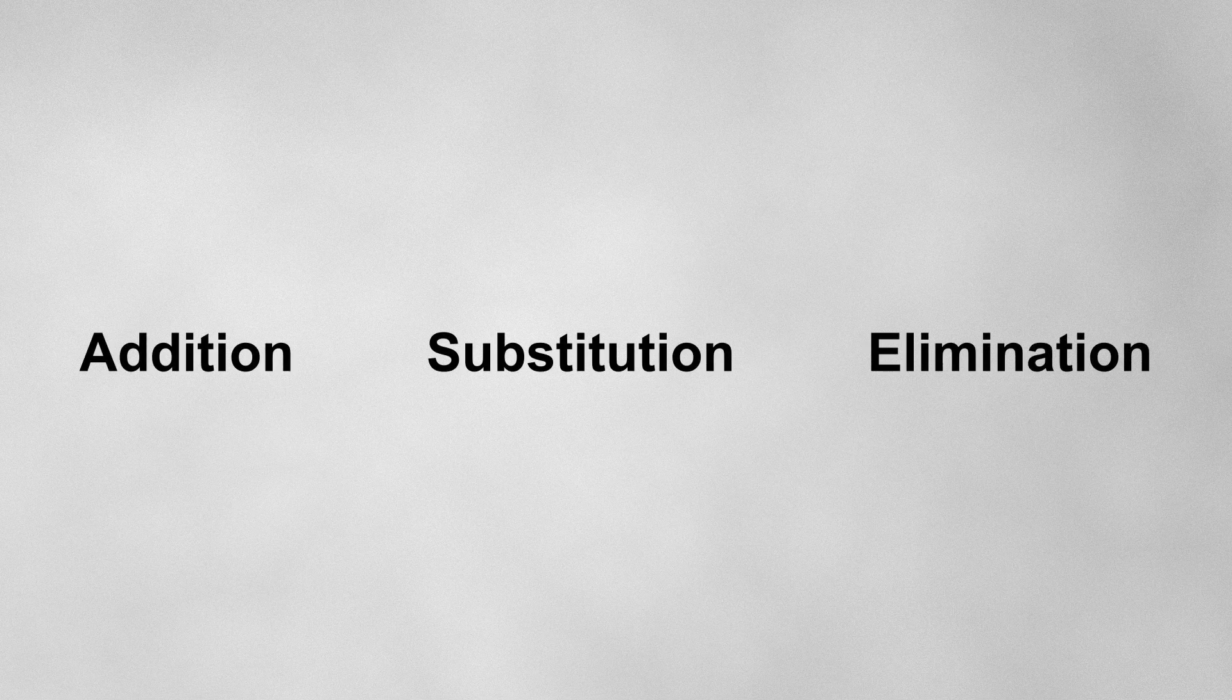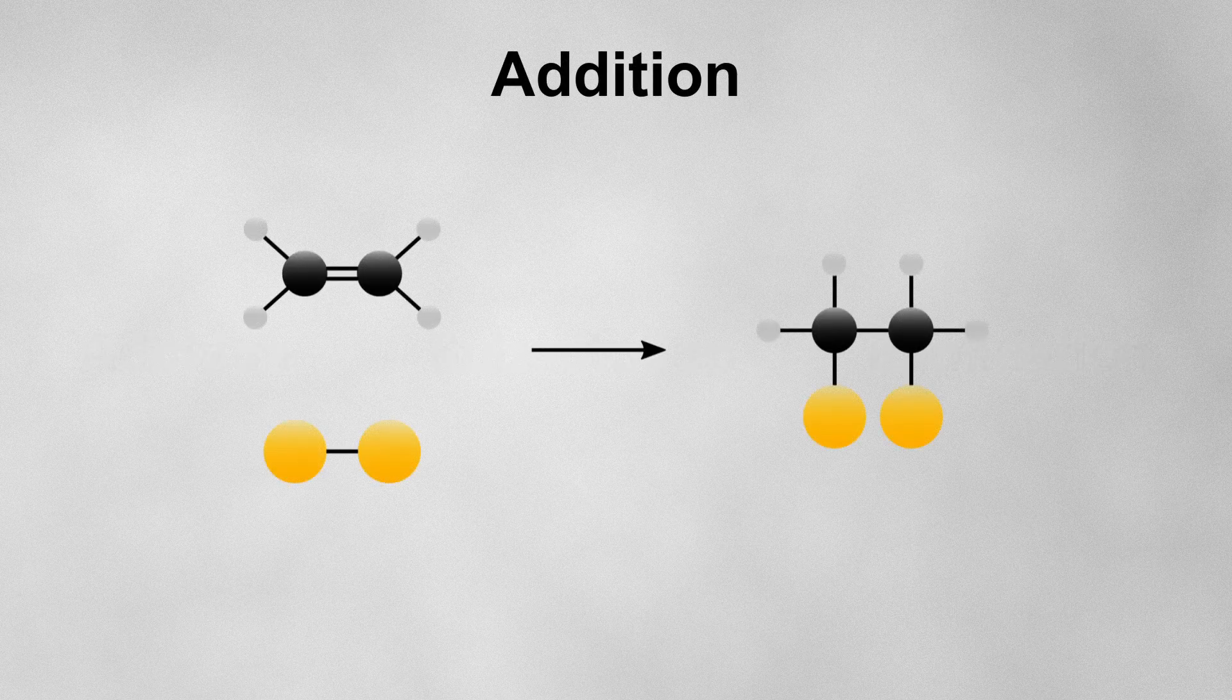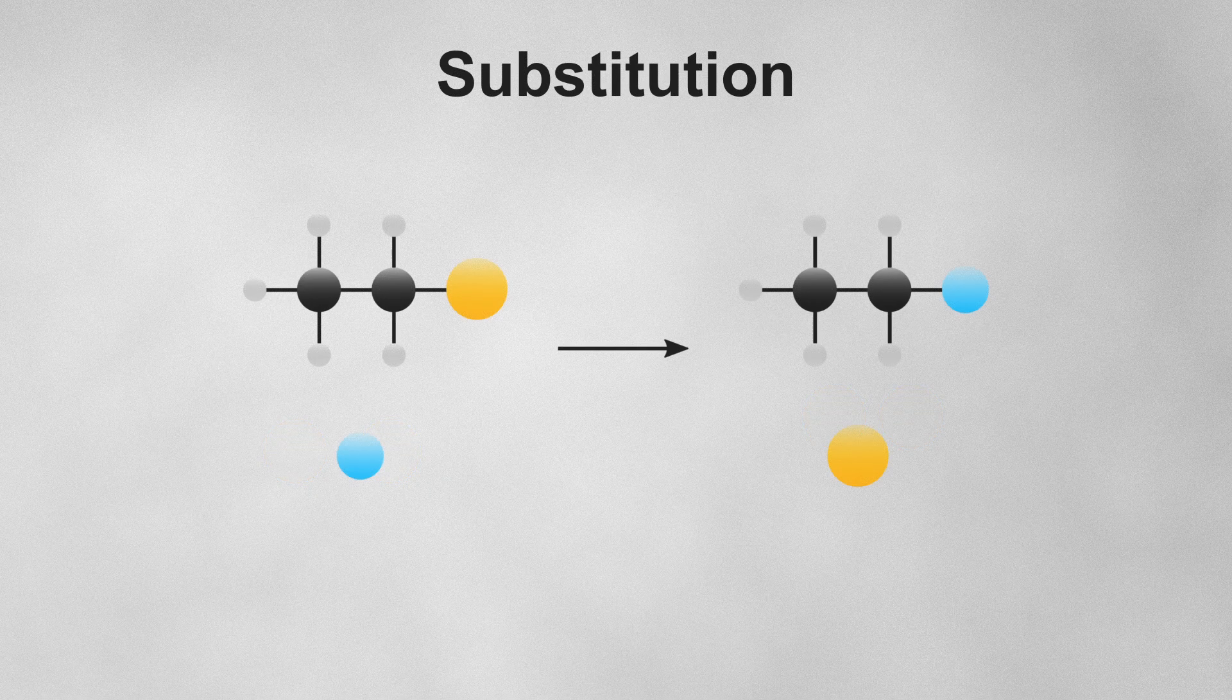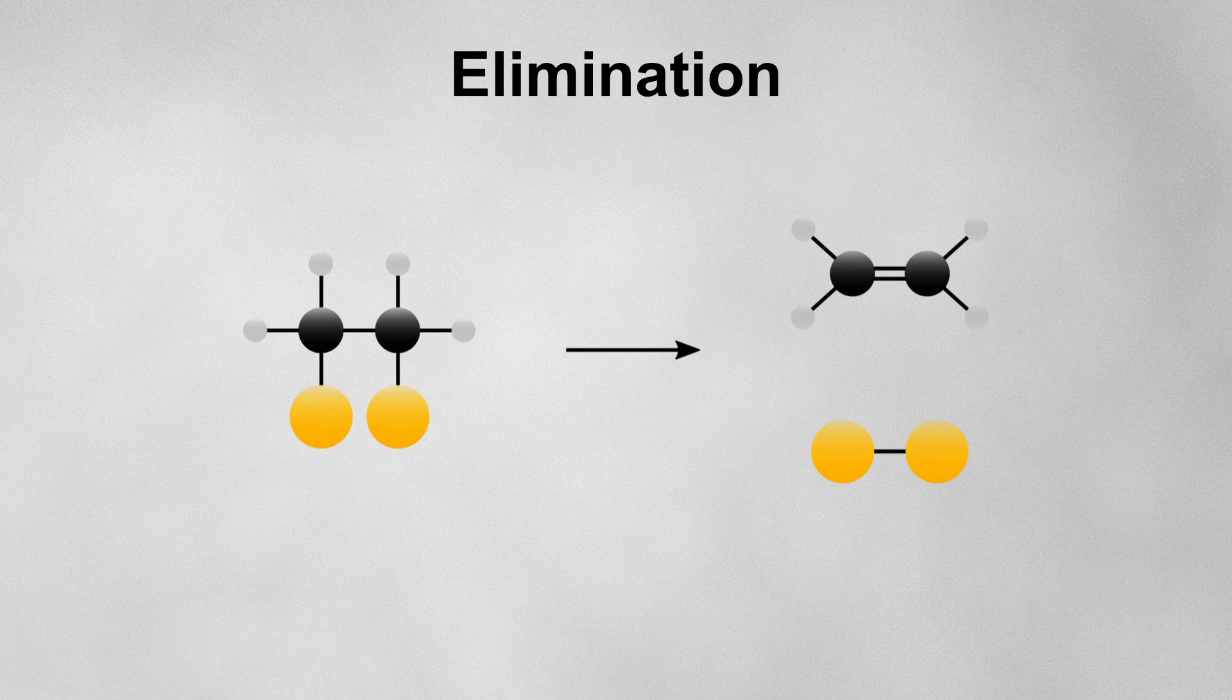The main reaction mechanisms that you'll need to know can be classified as addition, substitution, or elimination reactions. An addition reaction is when a group adds to a molecule. A substitution reaction is when a group takes the place of another on a molecule. An elimination reaction is essentially the opposite of an addition reaction, when a group leaves a molecule.